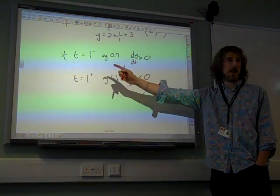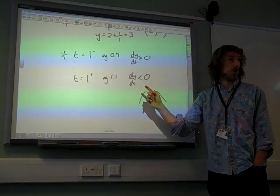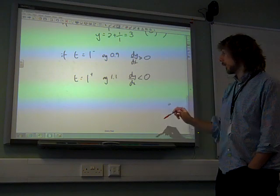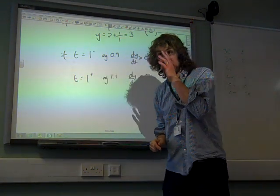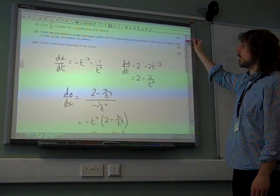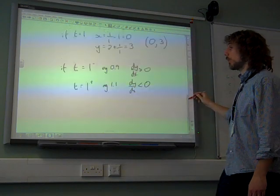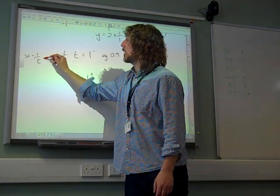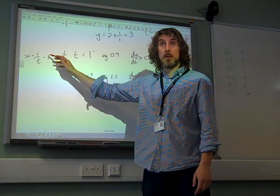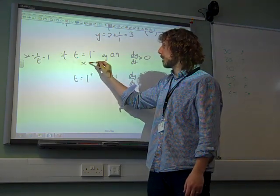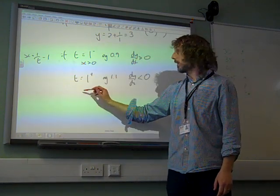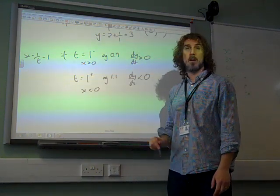But it's not t that matters. The gradient is with respect to x. So what matters here is what's happened to the x values as we pass through these points. And actually, if we think about this, if t is just less than 1, x is... I need to write down what it is. x is 1 over t minus 1, isn't it? If t is just less than 1, you get something that is bigger than 1, take away 1. So x is greater than 0. If t is bigger than 1, x is less than 0.